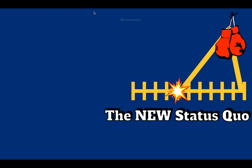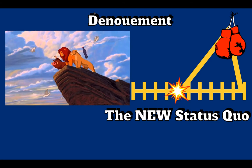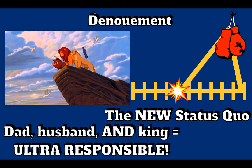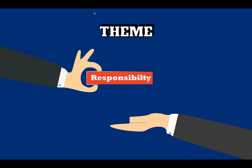The new status quo is known as the denouement. By Simba being responsible, coming back, and fighting Scar, he ends up getting married, being king, and having a baby — this is ultra-responsible. Based on that, what's the theme? Responsibility.